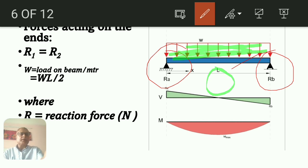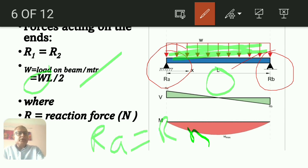The total weight will be WL, and from these functions, RA equal to RB will be total load divided by 2.